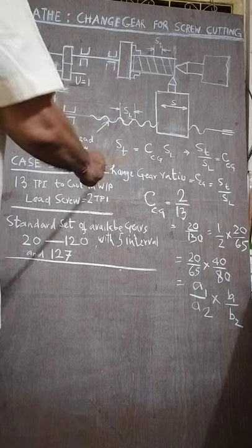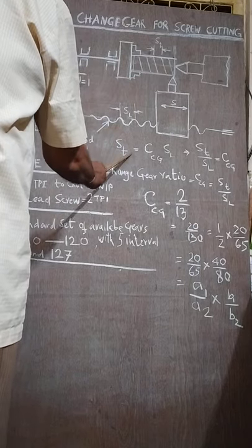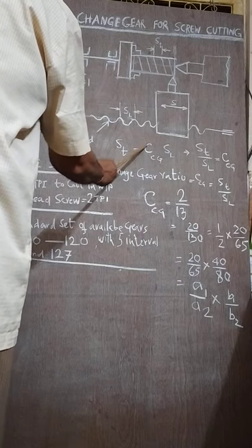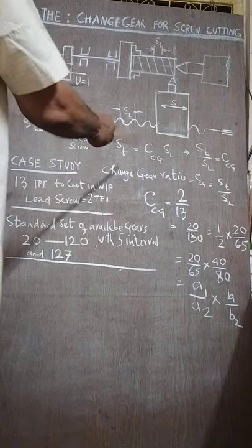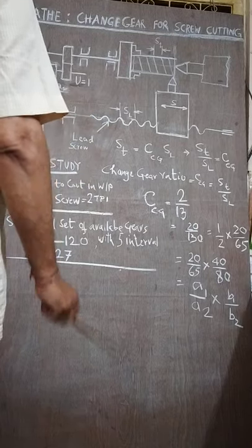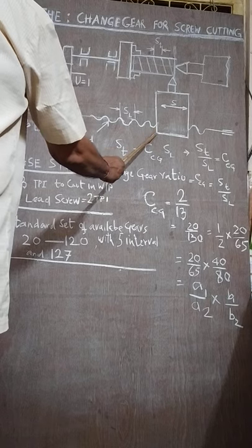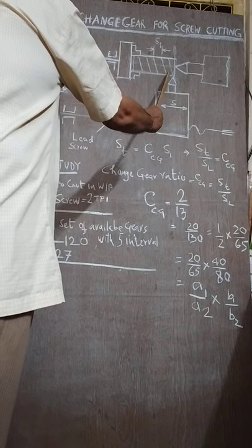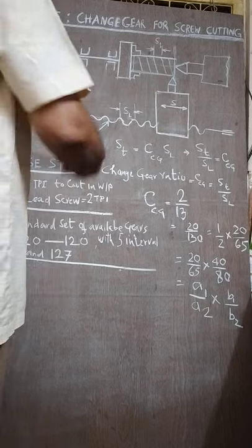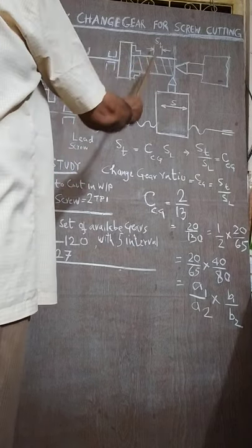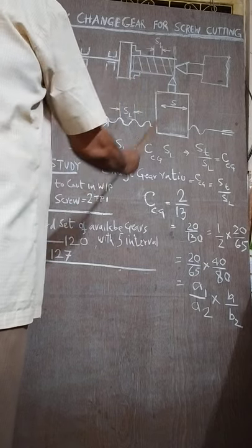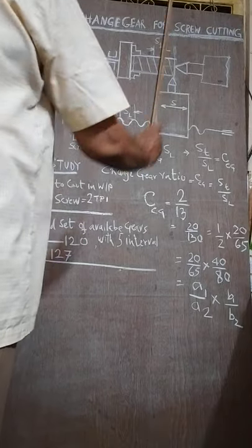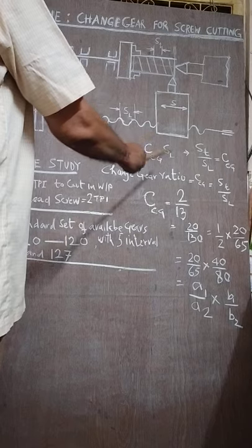With the basic equation, this is the lead of the screw we cut and this is the lead of the screw, and this is the change gear arrangement. The principle is that for each rotation of the spindle, the carriage will shift the distance of the pitch distance. Again I repeat, for each rotation of the spindle the carriage will move the distance of the lead length along the lead screw.